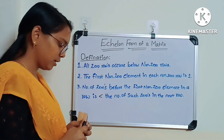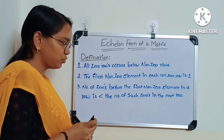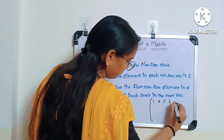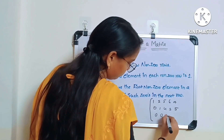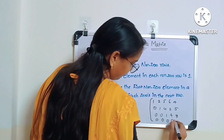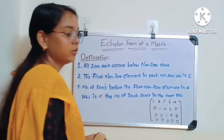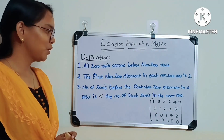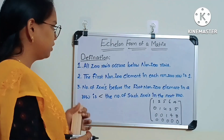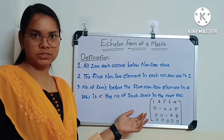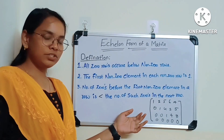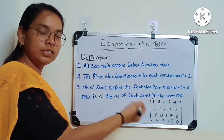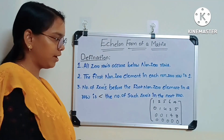Let me write an example. With the example, I will explain so that you can understand easily. I have written one matrix here, and we don't know whether it is an example of an echelon form matrix or not — I have written it randomly.